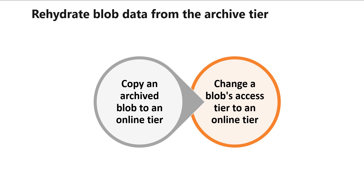A blob in the archive access tier is considered to be offline and cannot be read or modified. In order to read or modify data in an archive blob, you must first rehydrate the blob to an online tier, either the hot or the cool tier.